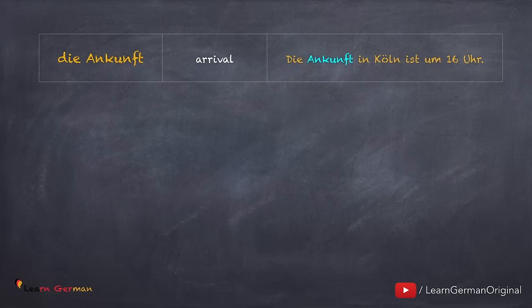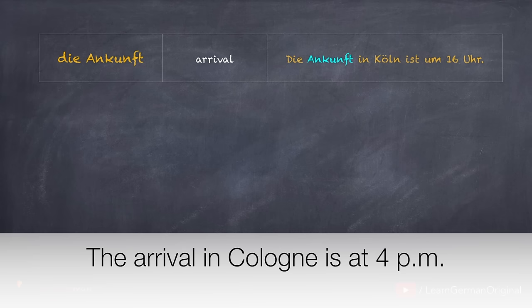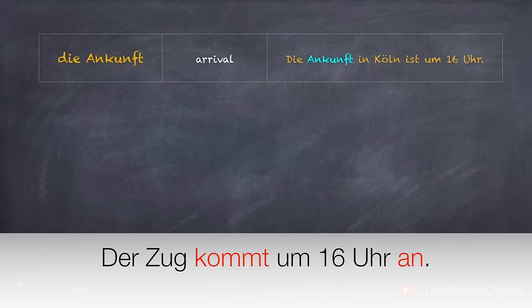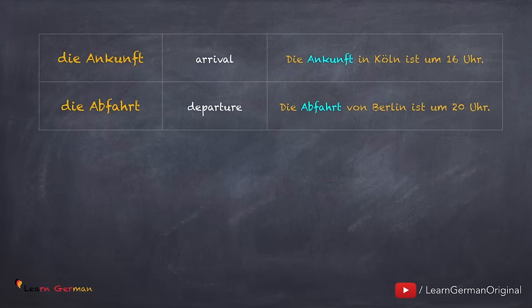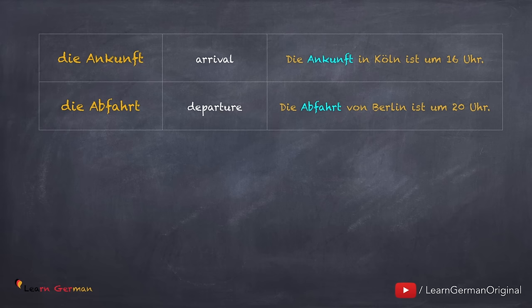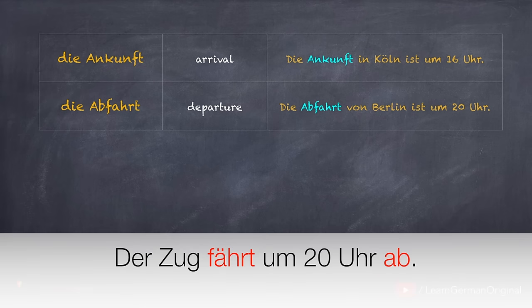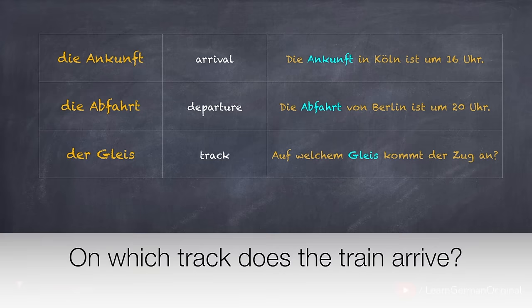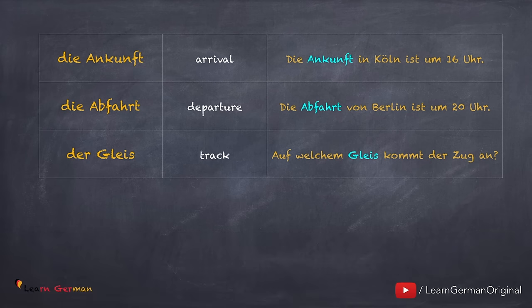Let's look at some more important words. Die Ankunft — die Ankunft in Köln ist um 16 Uhr. The verb for the same is ankommen: der Zug kommt um 16 Uhr an. Die Abfahrt — die Abfahrt von Berlin ist um 20 Uhr. And the verb is abfahren: der Zug fährt um 20 Uhr ab. Der Gleis — auf welchem Gleis kommt der Zug an?